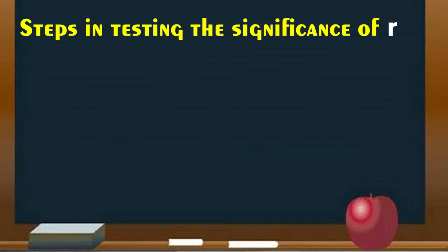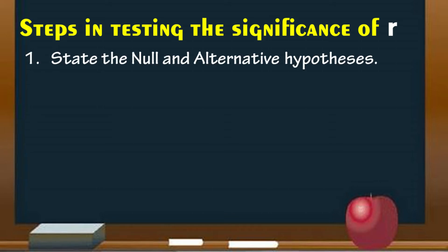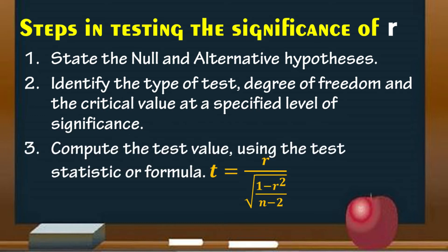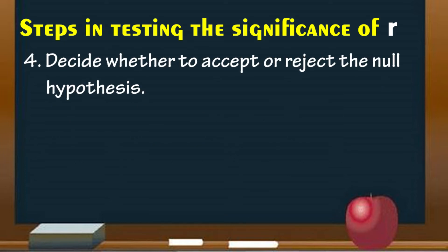Now we will test the significance of R using the following steps. First, state the null and alternative hypothesis. Second, identify the type of test, degree of freedom, and the critical value at a specified level of significance. Third, compute the test value using the test statistic or formula. Fourth, decide whether to accept or reject the null hypothesis. And fifth, make a conclusion.